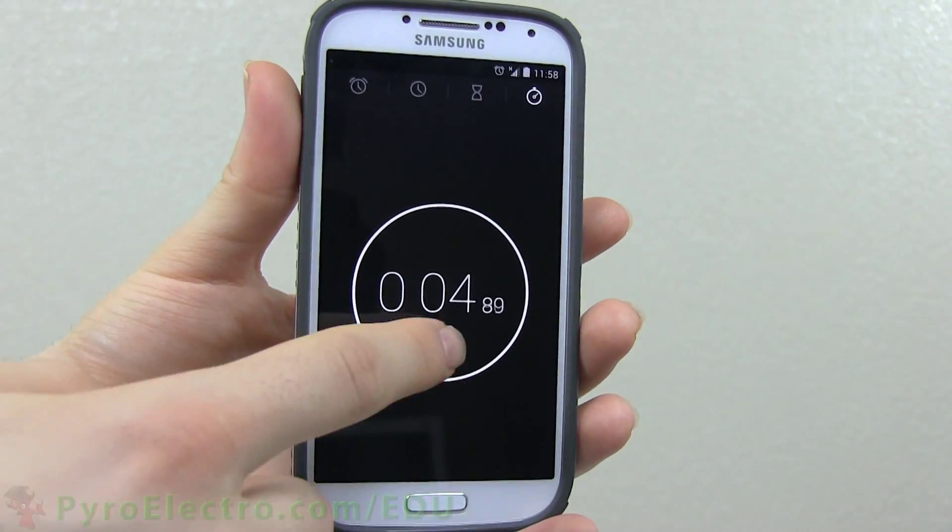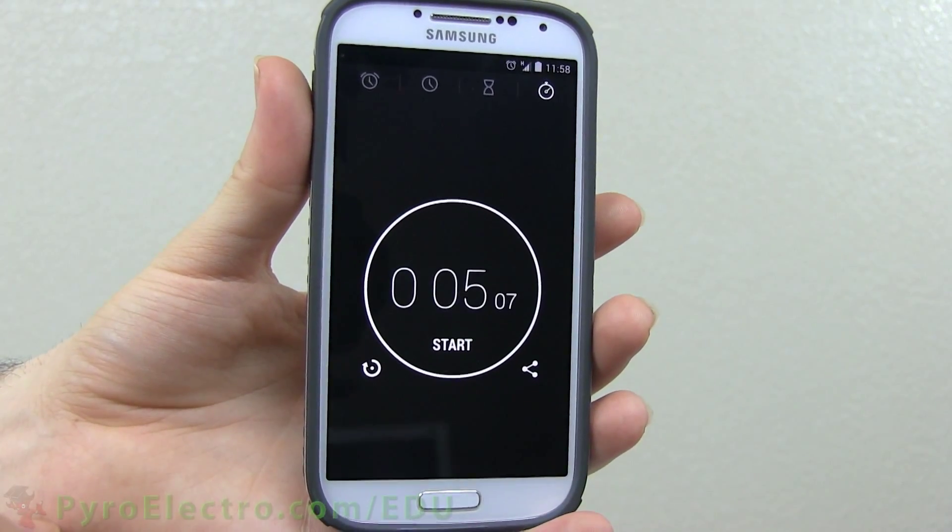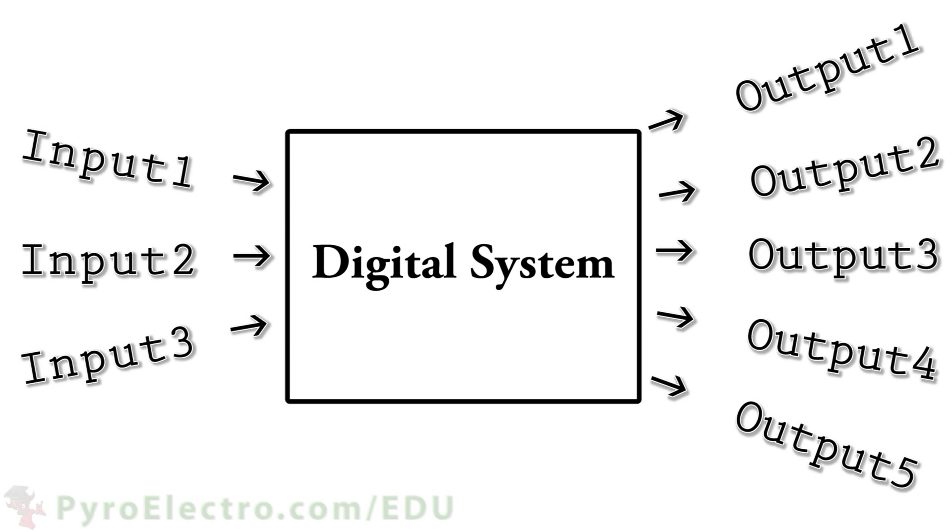This type of system is a one input, one output system. More complex systems will have multiple inputs and multiple outputs, where the correlation of how the inputs affect the outputs is less clear.